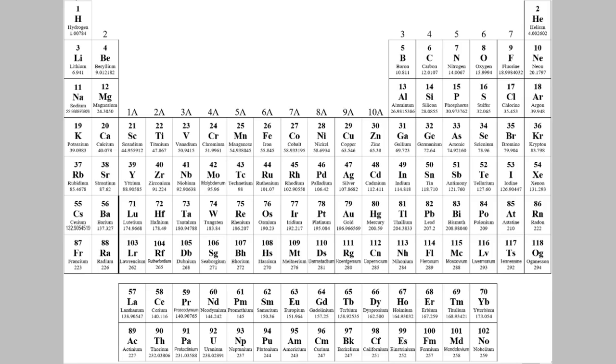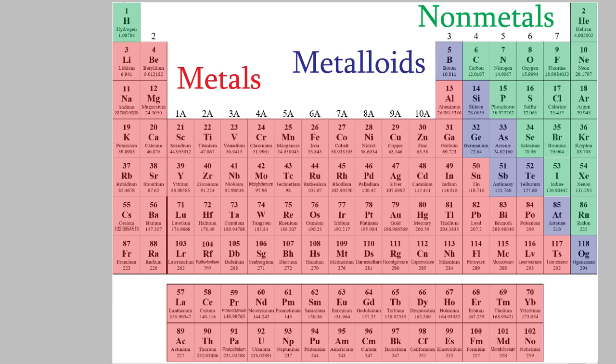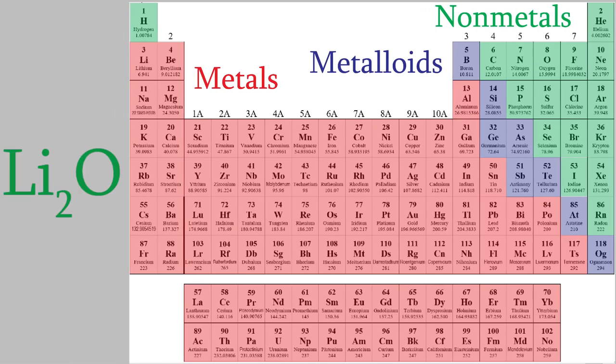Last time, we talked about dozens of different compounds. You might not have noticed it, but they all had something in common. Remember a few videos ago, we talked about the difference between metals and nonmetals? All the chemicals we talked about last time had both metals and nonmetals in them. For example, one compound we looked at was lithium oxide. In this compound, lithium is a metal and oxygen is a nonmetal.